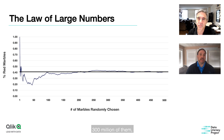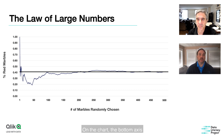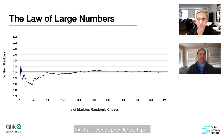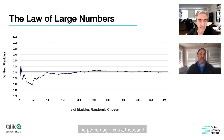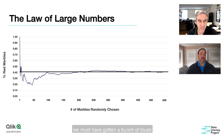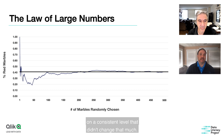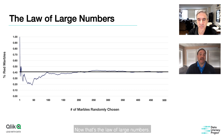Let's say we have a huge bin of 300 million marbles, and we want to determine what percentage are red and what percentage are blue. On the chart, the bottom axis is the number of balls chosen and the left axis is the percentage that came up red. In the beginning, the percentage was all over the place — 100%, then 33%, back to 50%, down to 25%. But after about 400 marbles, we pretty much settled in on a consistent level of 41%. That's the law of large numbers.